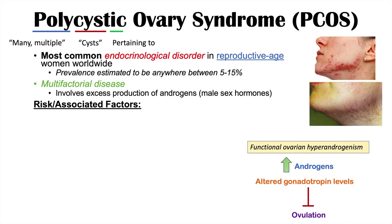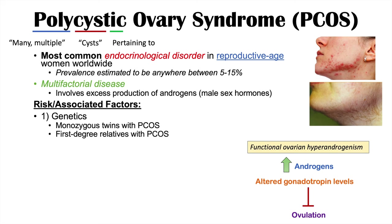What are some of the risk factors of PCOS? One of the main risk factors is genetics. When we look at twin studies, especially with monozygous or identical twins, if one twin has PCOS, the other twin is highly likely to also have PCOS. We also see that first degree relatives of individuals with PCOS are also at a high risk, indicating a strong genetic component.